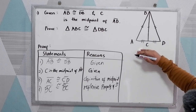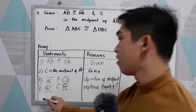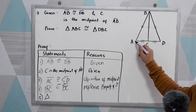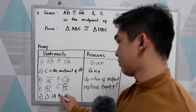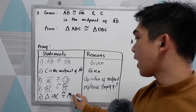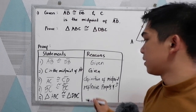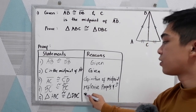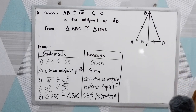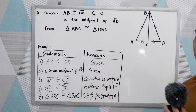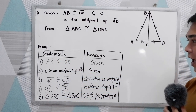Now, studying our illustration, we can say that triangle ABC is congruent to triangle DBC. So we have five statements and five reasons in this proof. Let's proceed to our second example.